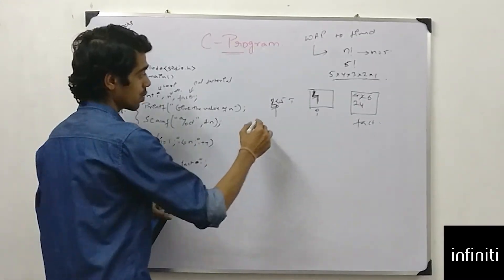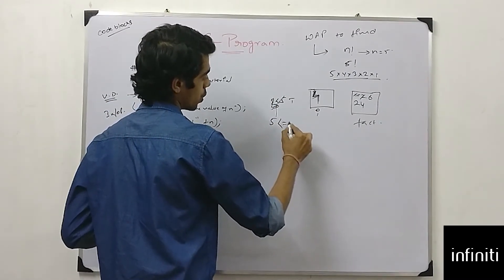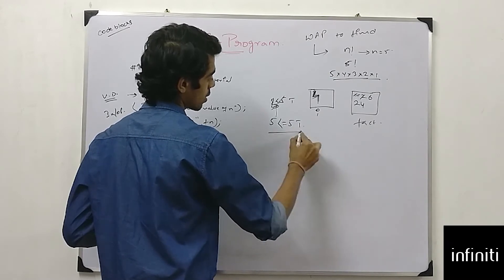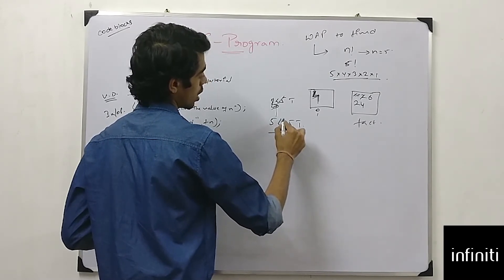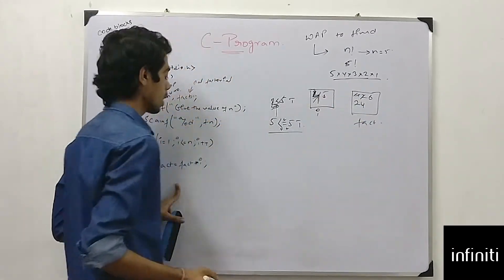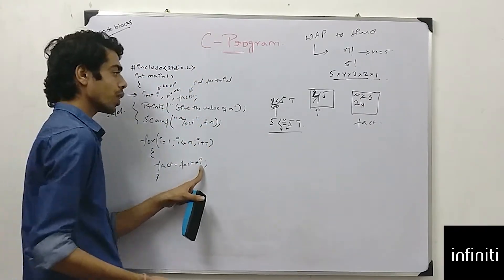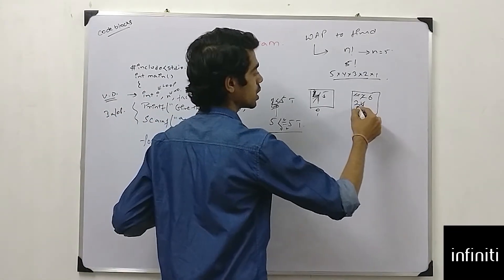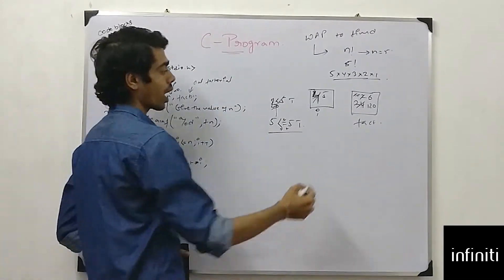Now for i is equal to 5. 5 less than no but equal to 5. Condition true. It will again satisfy. Not for this but for this. It will satisfy for equality. So my i is 5 now. And what is my fact? Fact is 24. So 24 into 5, which is 120. And 120 will be stored inside fact.